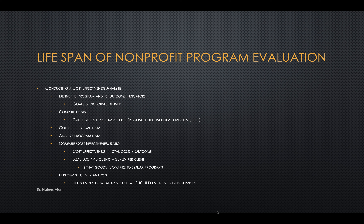After computing costs, you collect the outcome data, analyze program data, then compute the cost effectiveness ratio — which is total cost divided by the outcome. For example, $275,000 divided by 48 clients equals $5,729 per client. Whether that's good depends on comparing your program to similar programs during a similar time frame. You also perform a sensitivity analysis to help decide what approach to use in providing services. It's not enough just to be effective or efficient — it's also important to be sensitive to the community you're working with.